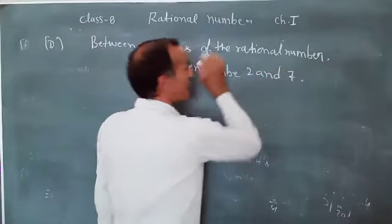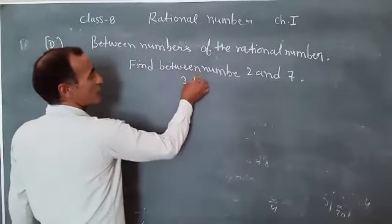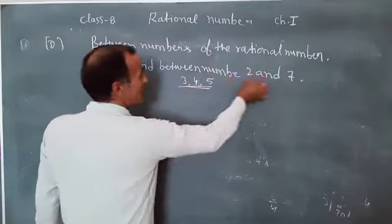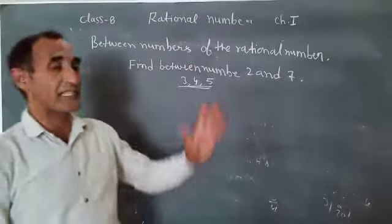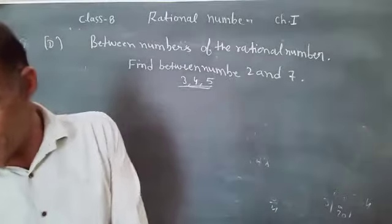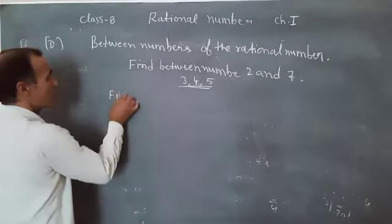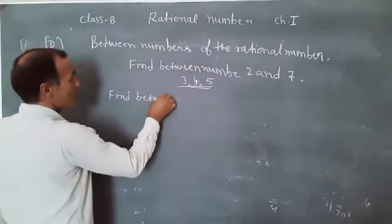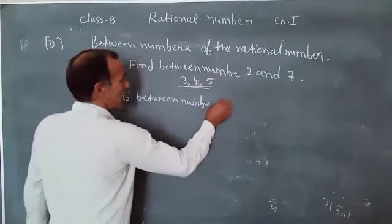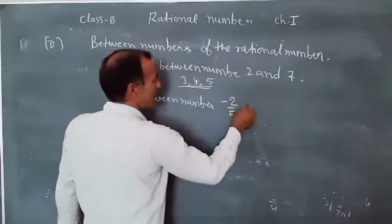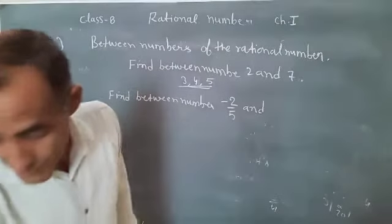I am telling about one example. For example, find between number 2 and 7. So it is the whole number. We know about that the between number is 3, 4, 5. But it is the whole number. So we find the between number in the rational number.